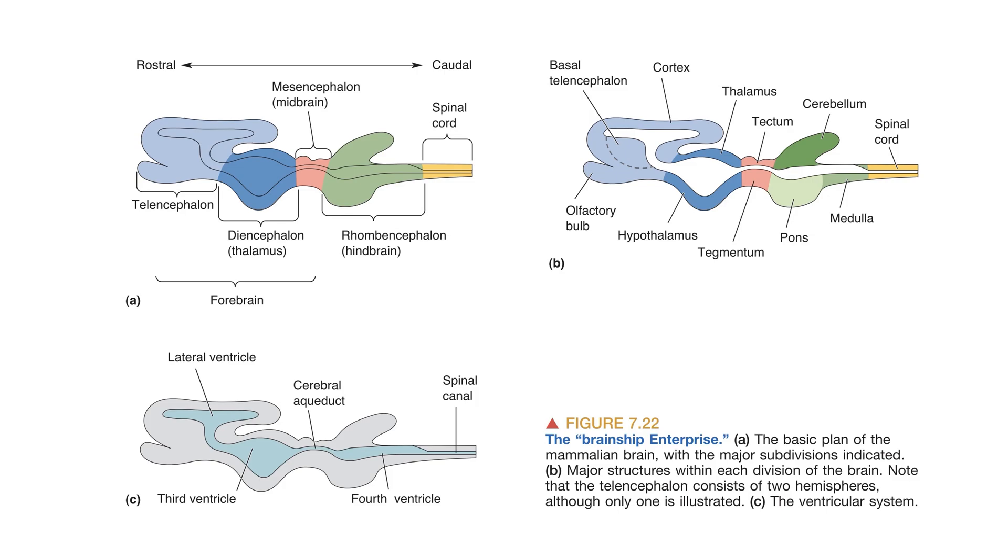The third ventricle is continuous with the cerebral aqueduct. Dorsal to the aqueduct is the tectum. Ventral to the aqueduct is the midbrain tegmentum. The aqueduct connects with the fourth ventricle that lies at the core of the hindbrain. Dorsal to the fourth ventricle sprouts the cerebellum. Ventral to the fourth ventricle lie the pons and the medulla.